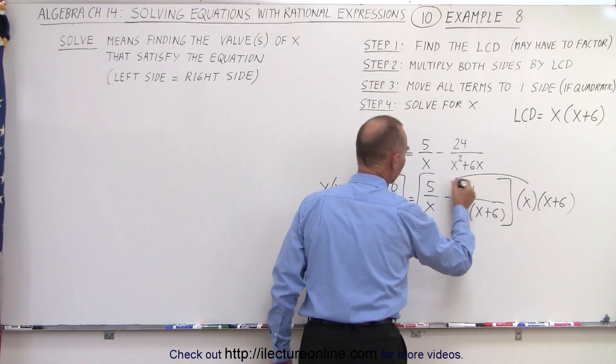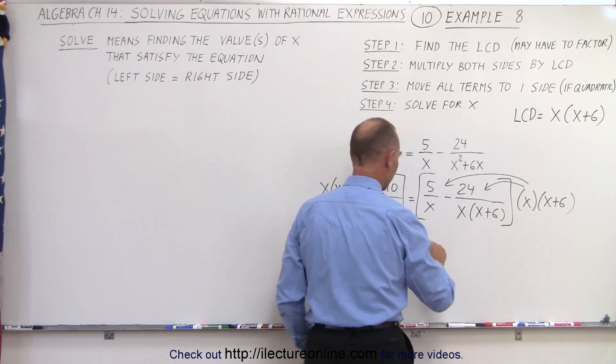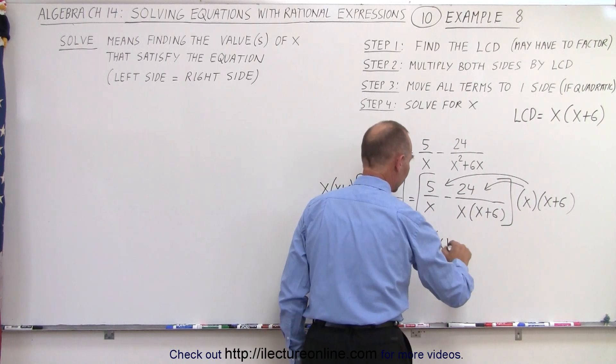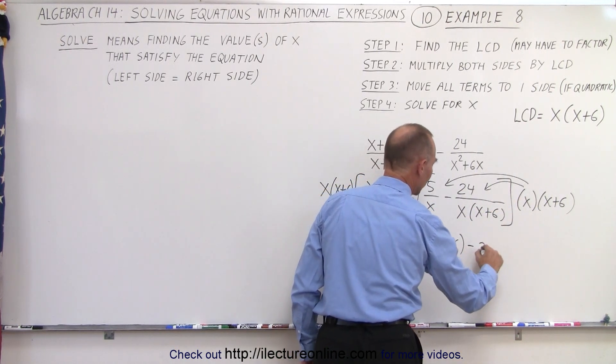We have to multiply this by both terms. The first one—notice the x's will cancel out and you're left with 5 times (x+6). And here both of them will cancel out and you're left with a -24.